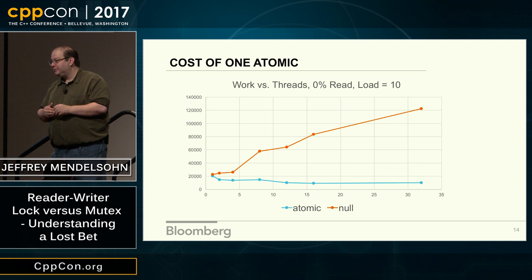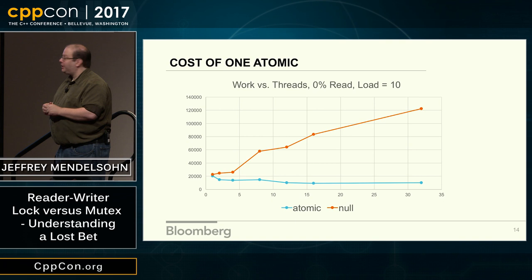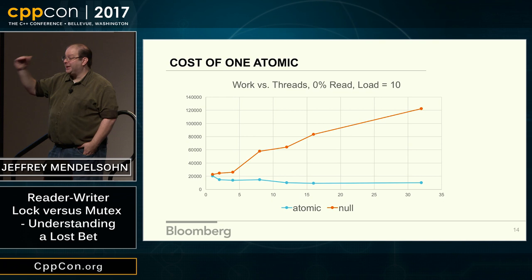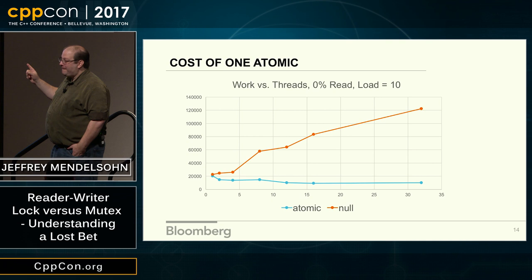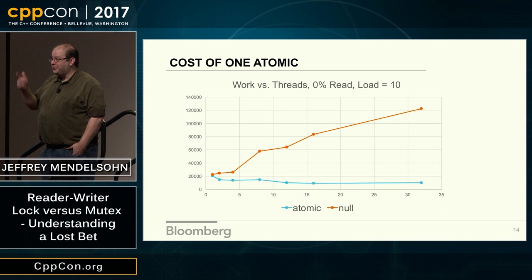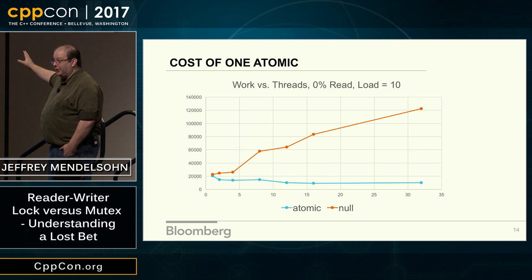Regarding synchronization primitives: here I'm just showing the effect of one atomic operation, which is not a true lock. I'm showing that if we do nothing performance is here, if we use just an atomic we're down here, and if we actually use a mutex we're even further down. The next set of slides will cover mutex and semaphore, then the losing implementation, and then the winning implementation.